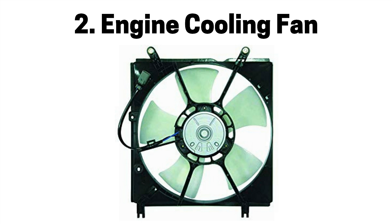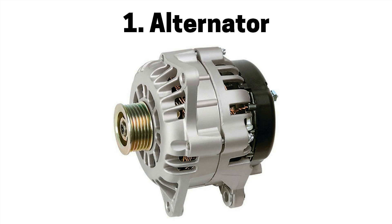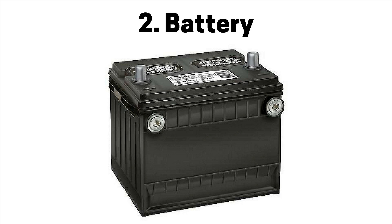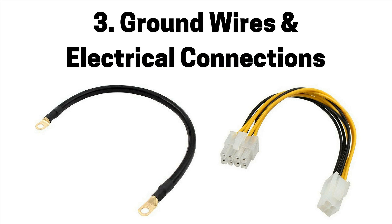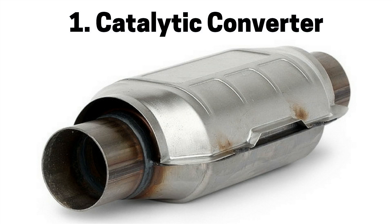Number two is a faulty engine cooling fan causing engine overheating and a check engine light. Next pertains to electrical systems. Number one is a faulty alternator which can affect multiple systems causing a lean air fuel mixture, engine misfire, and a check engine, alternator, or battery light. Number two is a faulty battery which can affect multiple systems causing a lean air fuel mixture, engine misfire, and a check engine, alternator, or battery light. Number three is a faulty ground wire or electrical connection to the alternator, battery, or engine control module, which can affect multiple systems causing a lean air fuel mixture, engine misfire, and a check engine, alternator, or battery light.